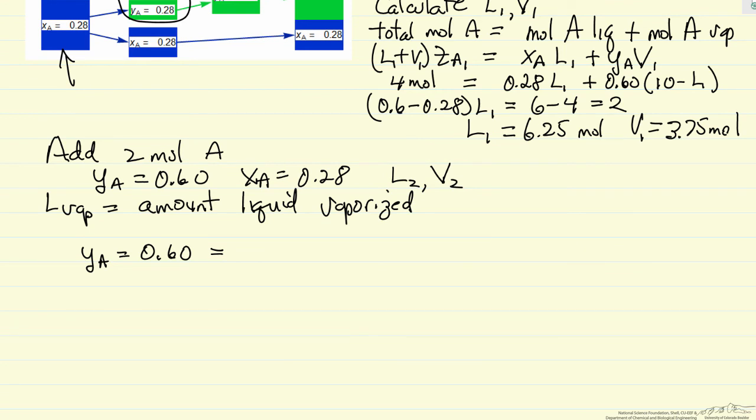Mole fraction of 0.6 means moles of A, well, we've added two moles of A, and then we're going to vaporize with the mole fraction, of course, of A hasn't changed, times the amount of A vaporized. So that's the amount of A vaporized.